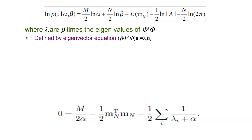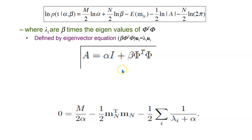Now we find the optimal alpha. The equation cannot be solved directly as such, so we use eigenvalues and eigenvectors. We define an eigenvalue decomposition of the matrix A. Since A is a matrix, we assign eigenvalue lambda_i to it. When we take ln|A|, we can apply the eigenvalue decomposition so that ln|A| becomes a sum of ln(lambda_i + alpha).